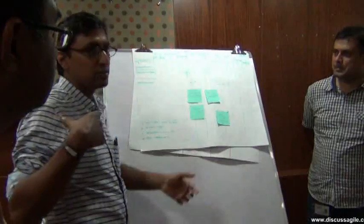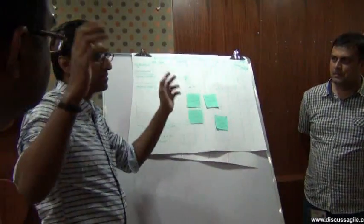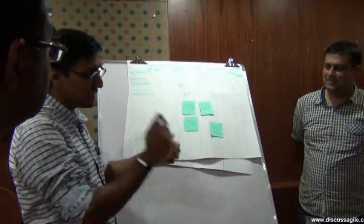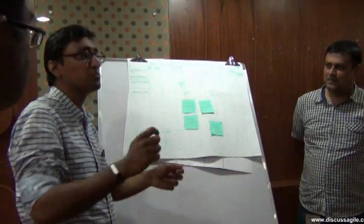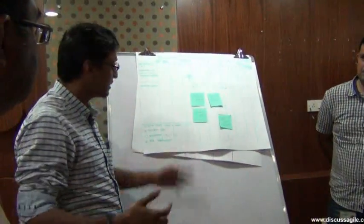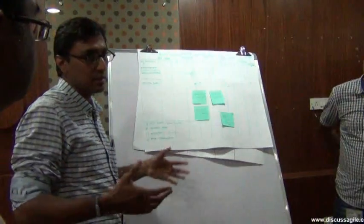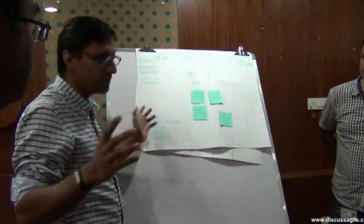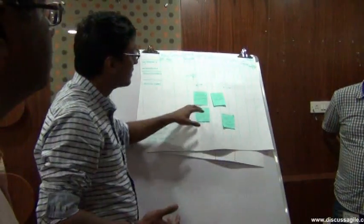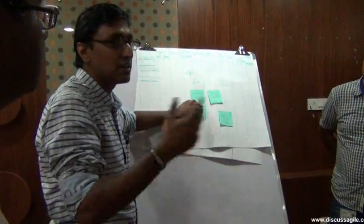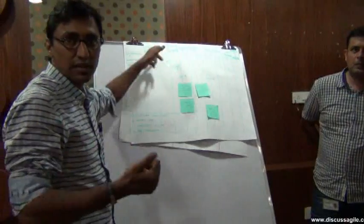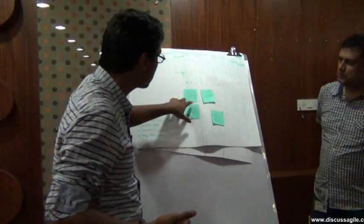A quick solution discussed: using what is called a scrum-ban board - any time anyone finds a refactoring item to be done, put a sticky note there with the date it was found, and as and when you find time, pick it and do it. It's been working great for the team because most technical debt has been fixed. Requirements granularity - epic to user stories - is also something to discuss.